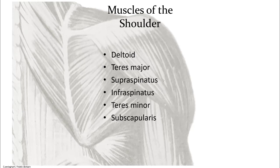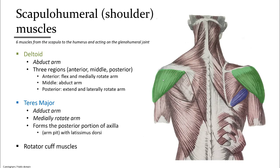Moving on to the muscles of the shoulder, including the rotator cuff muscles. The main muscle that abducts the arm is the deltoid, which you can feel as a cap to your upper arm in the shoulder area, shown in green. The teres major muscle goes from the inferior angle of the scapula to the shaft of the humerus, aiding the latissimus dorsi in adduction of the arm. Its attachment on the humerus is on the anterior side, so the teres major will also help to medially rotate the arm.